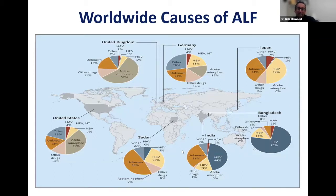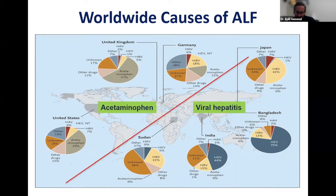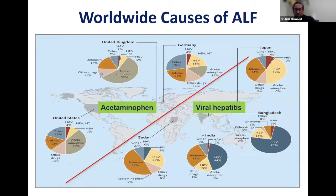In the Western world, acetaminophen is still the number one cause. In the United Kingdom, about 57% of cases were acetaminophen, hepatitis B was 5%, and other drug-induced liver injury was 11%. In the U.S., acetaminophen can be anywhere between 40 to 50%, hepatitis B is only 7%, other drug-induced liver injury was 13%, and unknown or indeterminate causes were 18 to 17%.